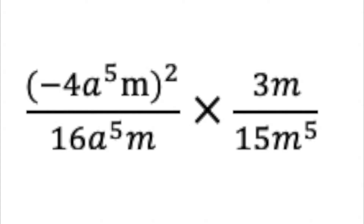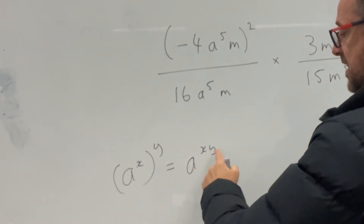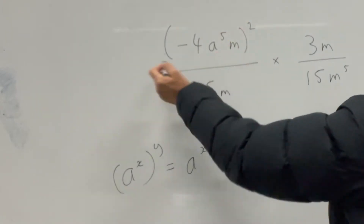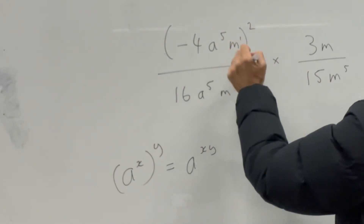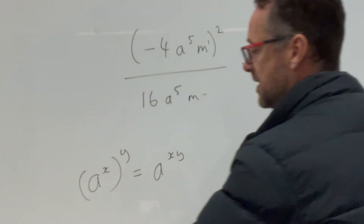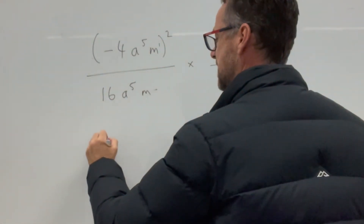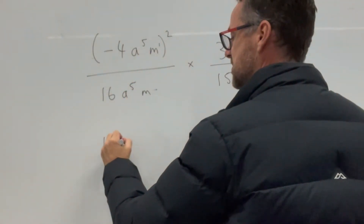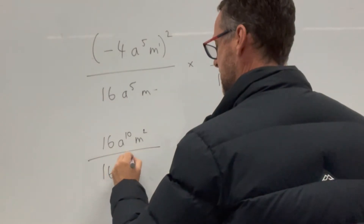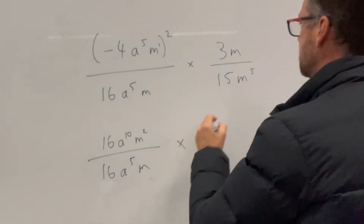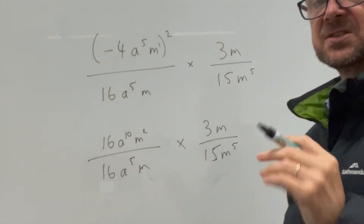Here we need the rule that (a^x)^y = a^(xy). When resolving this bracket, we multiply the 2 by the 1 and the 2 by the 5. So negative 4 squared becomes 16, a to the 5 becomes a to the 10, and n to the 1 times 2 becomes n squared. That's all over 16a⁵n, multiplied by 3n over 15n to the 5. Now we've got rid of the brackets and can do some cancelling.